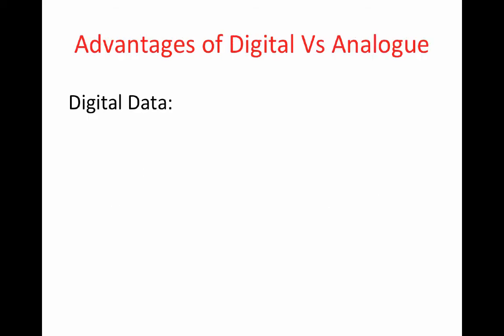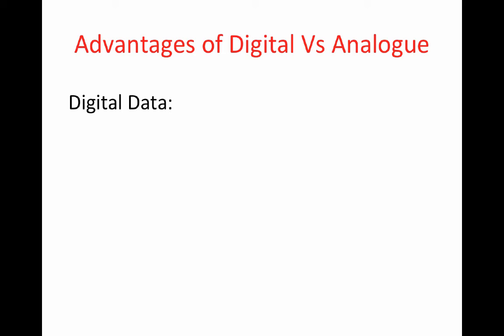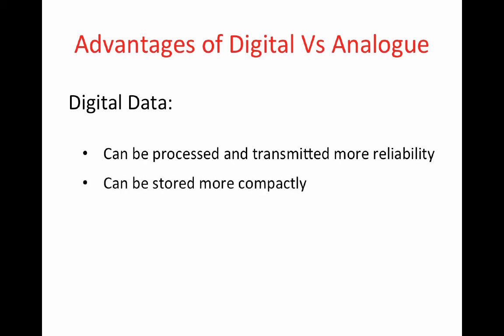So what advantages does digital offer over analogue in electronics? Digital data can be processed and transmitted more effectively and reliably than analogue data. Digital data can be stored more compactly and reproduced with greater accuracy.